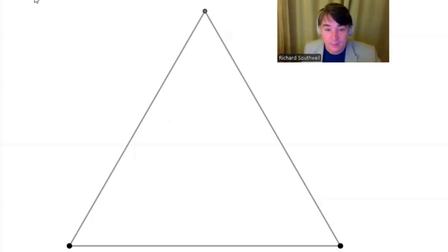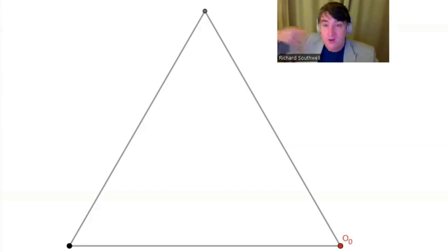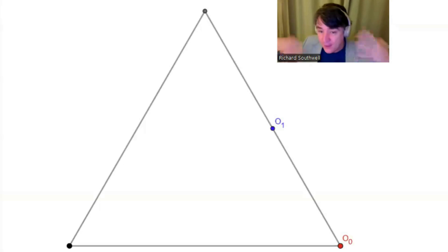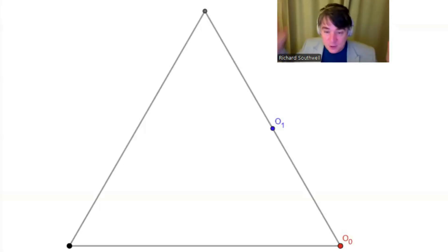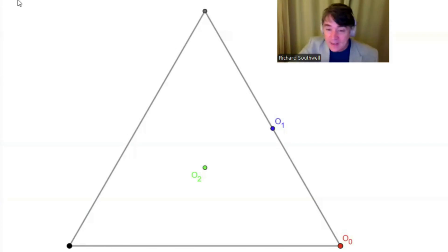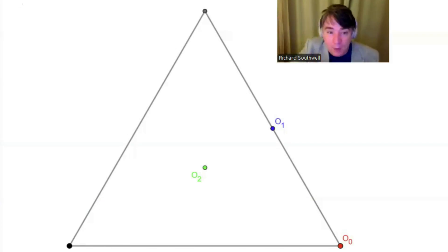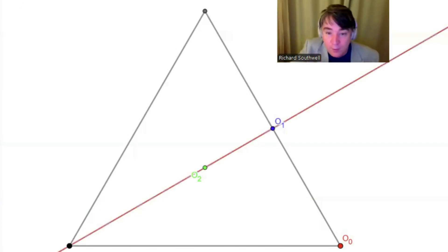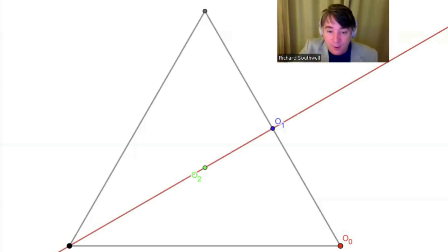You pick a vertex, call it O0. Then you pick any edge touching that vertex, call the middle of it O1. Then you pick any face touching that edge, call the middle of it O2. Make a red mirror line through O1 and O2, and a blue mirror line through O0 and O2.